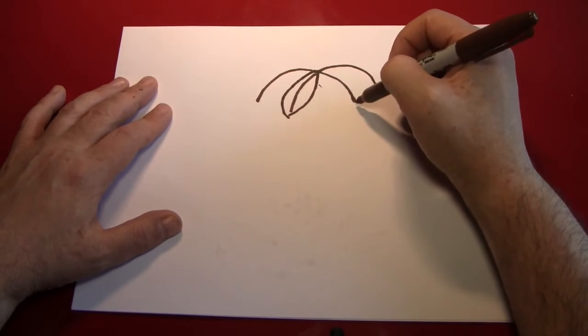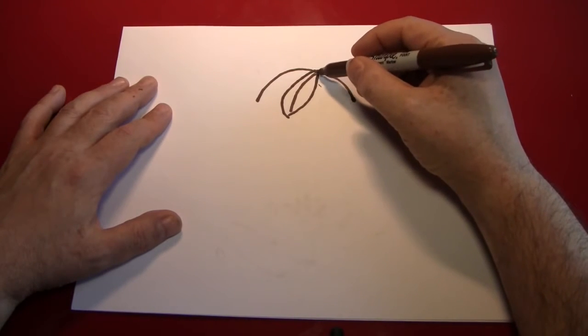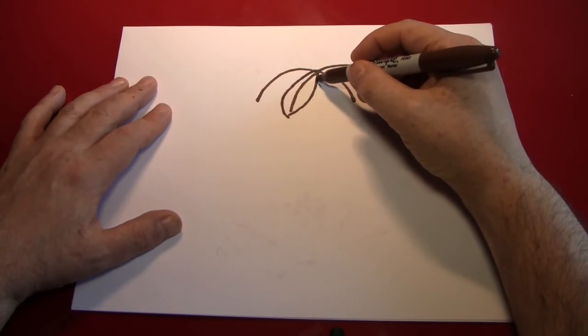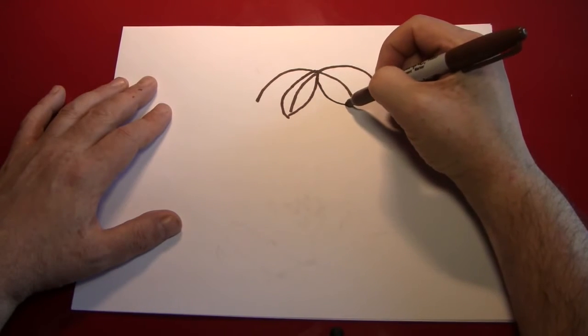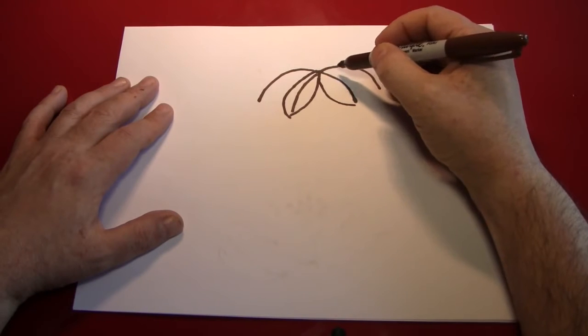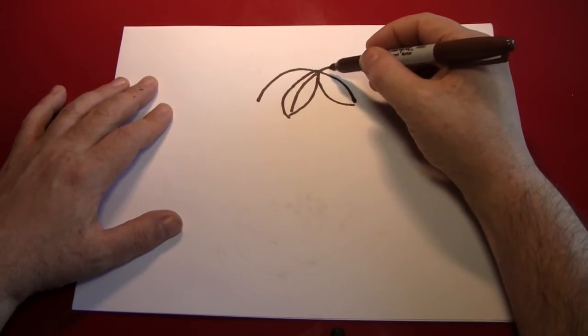Come over here and repeat the process. Don't go all the way to the converging point though, start a little bit up here. Now that'll give it the illusion that it's underneath the other leaf.